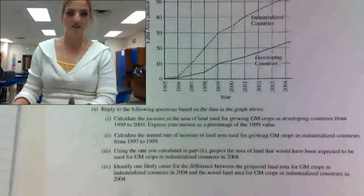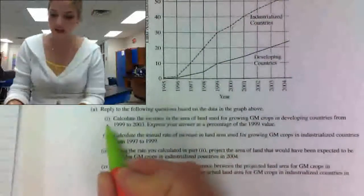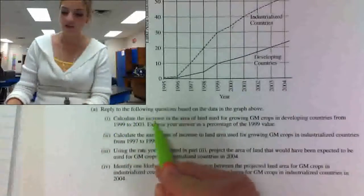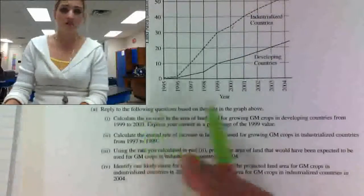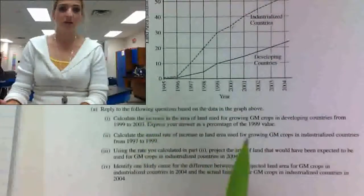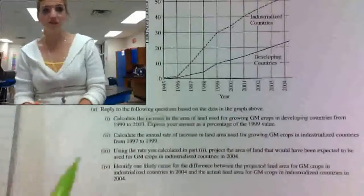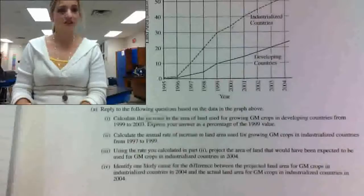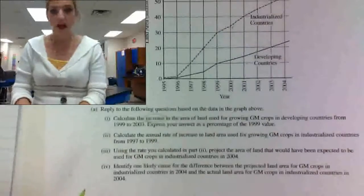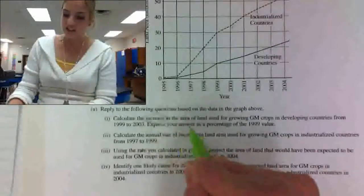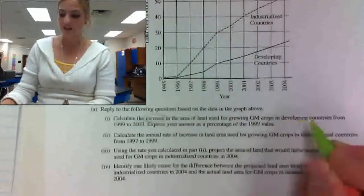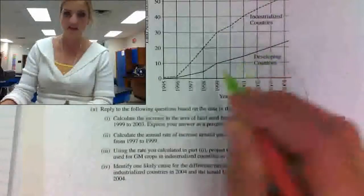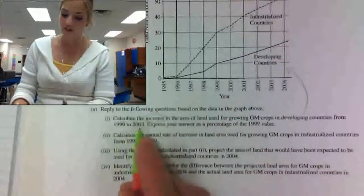So let's get started. Part one says to calculate the increase. When I see the word increase, I automatically think I'm going to have to subtract. If you have an allowance of $10 a week and it goes to $15 a week, how much did it increase? You said five — you subtracted. Increase means subtract. So I'm going to be using this bottom solid line graph from 1999 to 2003.